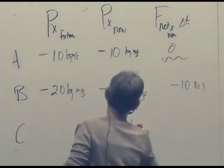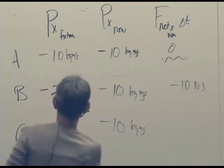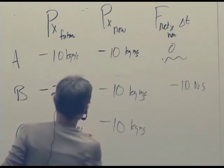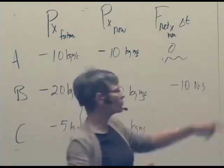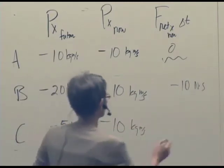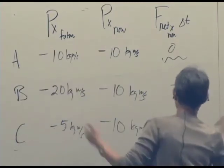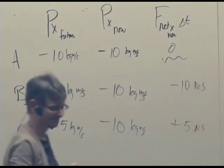C started out at negative 10 kilogram meters per second. But it decreased to negative 5. So that wasn't experiencing a net force to the left. So we're reasoning with the equation without numbers. So it's plus 5 Newton seconds. Perfect.